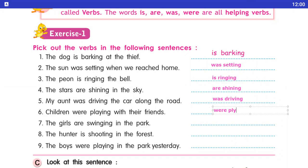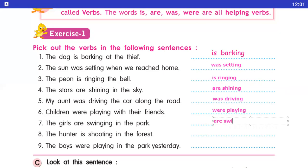Number seven: the girls are swinging in the park. Girls park mein swinging — means jhula jhul rahe hain. Are swinging — are helping verb hai humara, aur swinging jo hai humara main verb hai.